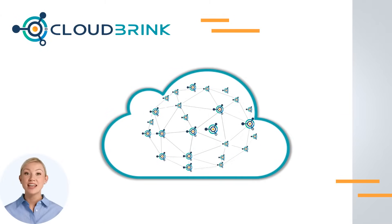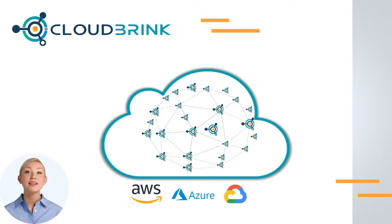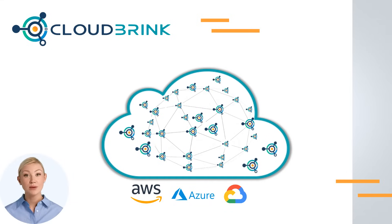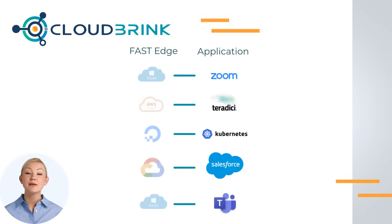The Cloud Brink fast edge network is deployed in all major tier-one cloud providers, and a growing number of regional providers for localized low-latency access globally. While traditionally referred to as static points of presence, Cloud Brink's edges are much more ephemeral. These edges are frequently scaled to create denser global edge coverage, while optimizing and anonymizing traffic. Our edge network is able to dynamically measure and route traffic to the lowest latency path across all edges.